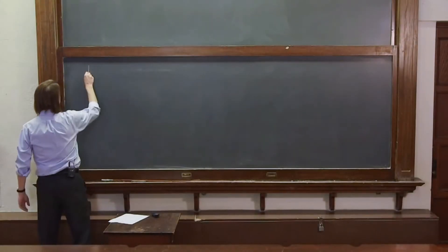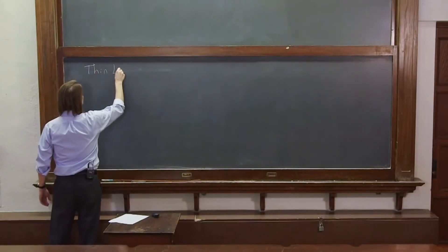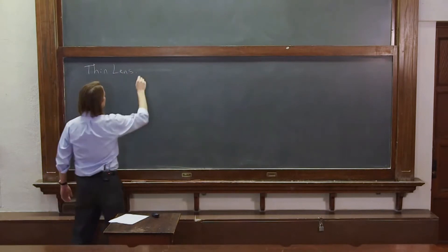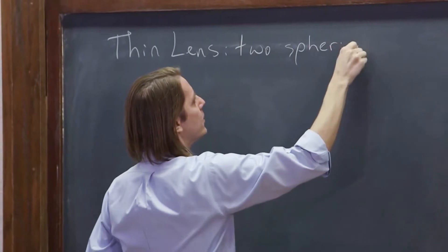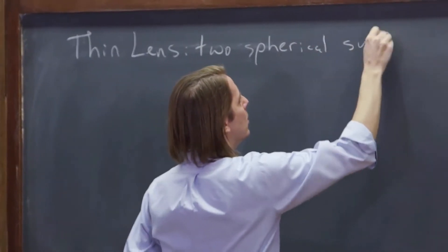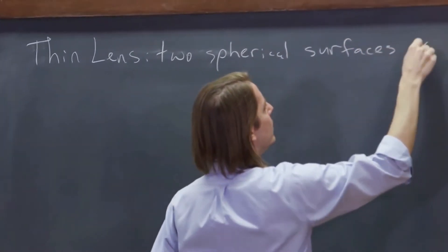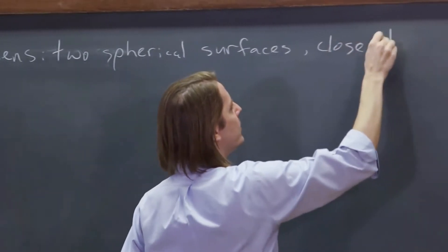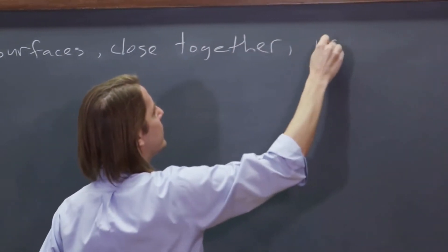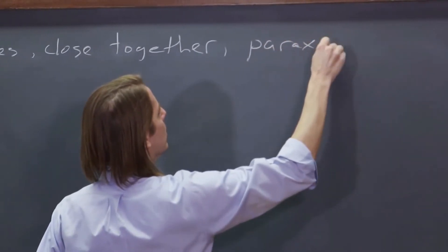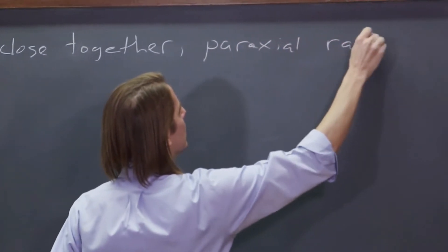We are now ready for the thin lens. So it's going to be two spherical surfaces, close together. And let's just consider paraxial rays.